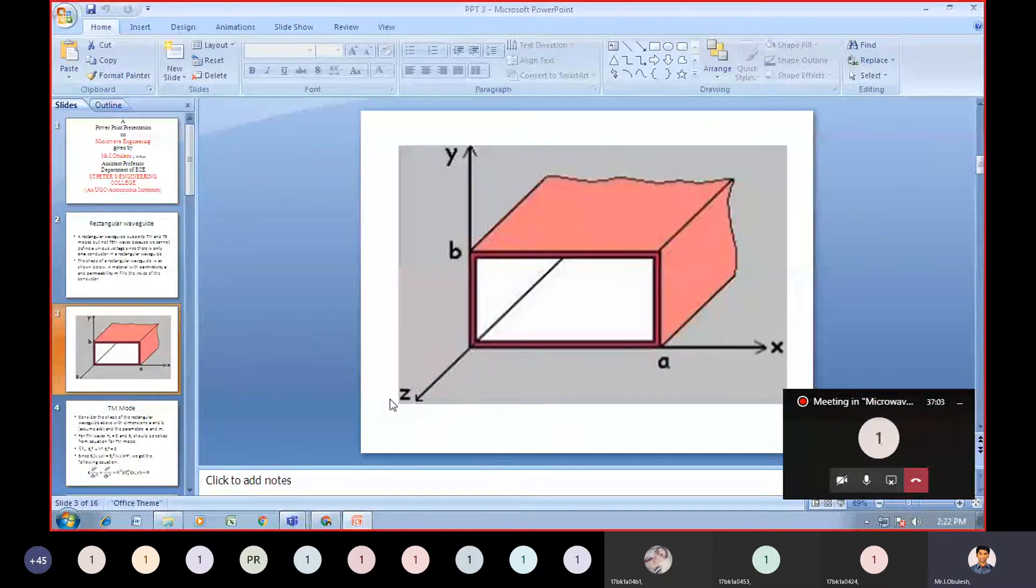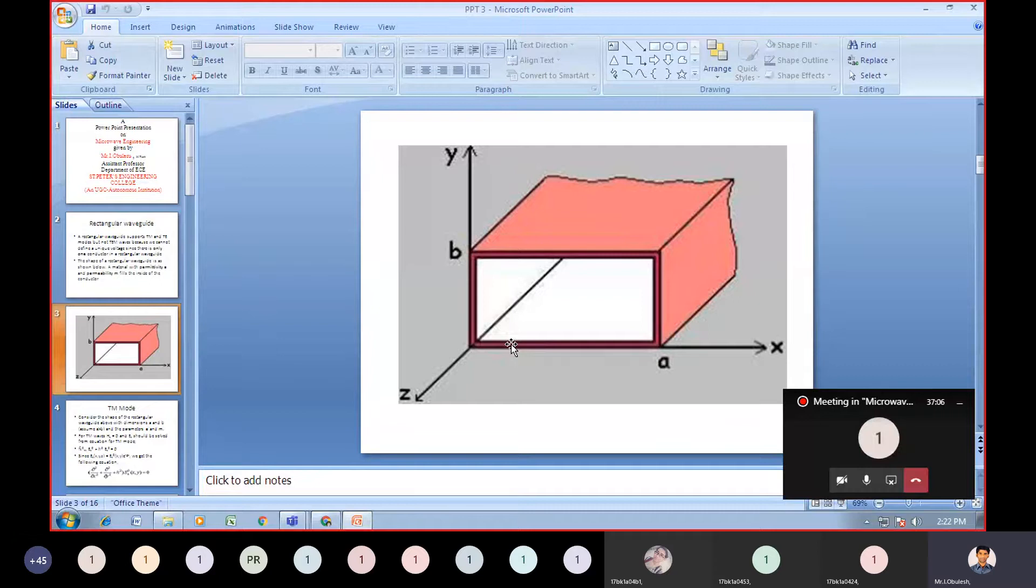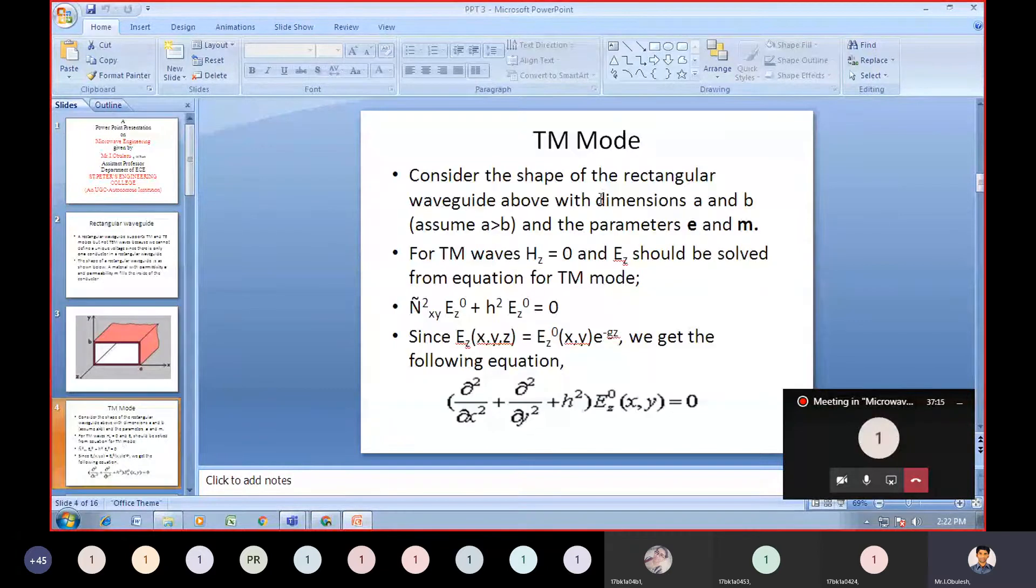Let us assume that the A value is greater than B. Let us consider the shape of the rectangular waveguide with dimensions a and b, where a is greater than b, and the parameters epsilon and mu represent permittivity and permeability.